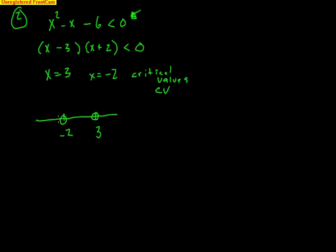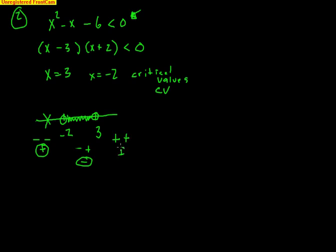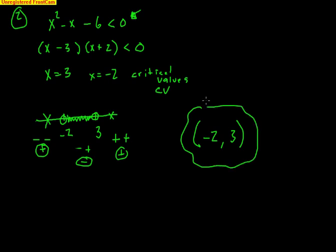Test any number below negative 2, like negative 10. Negative 10 minus 3 is negative 13; negative 10 plus 2 is negative 8 — both negative, and two negatives multiplied make positive. I need numbers less than 0, so that interval doesn't work. Try 0 in the middle: 0 minus 3 is negative 3, 0 plus 2 is positive 2 — a negative times positive makes negative. I like negatives. For numbers greater than 3, like 22: both factors are positive, making a positive — I don't want that. My answer is all numbers from negative 2 to 3, non-inclusive, so no brackets.